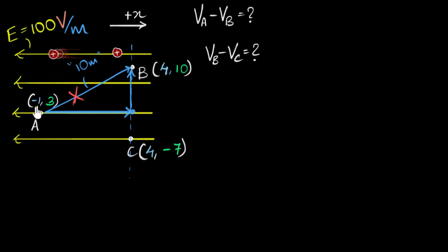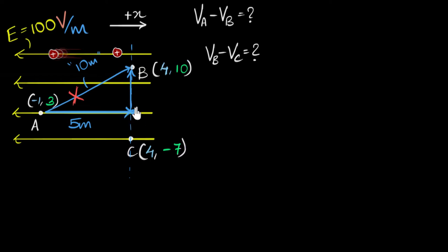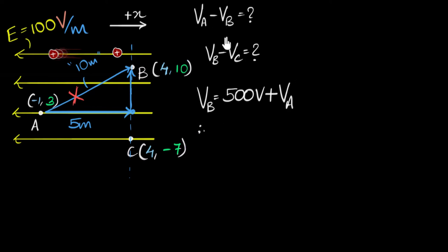I just need to figure out the distance along the x-direction. Point A is at x = -1 and point B is at x = +4, so the difference is 4 minus (-1) = 5 meters. For every meter I go forward against the field I gain 100 volts, so going 5 meters I gain 500 volts. Therefore VB is 500 volts more than VA, meaning VA minus VB equals negative 500 volts.